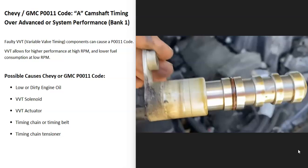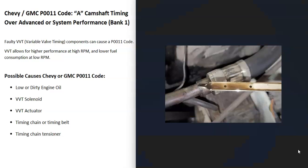Some possible causes of a P0011 code: the first thing is going to be low or dirty engine oil, because the engine oil flows through the variable valve timing. If the oil is low or really dirty, it's going to affect the variable valve timing and cause issues. So the first thing to do is check your engine oil — be sure it's not low and not really dirty.